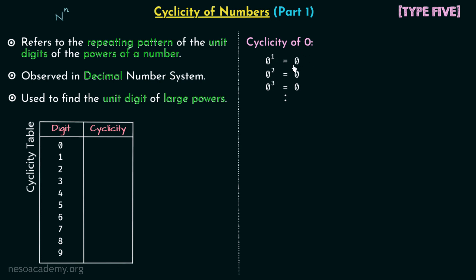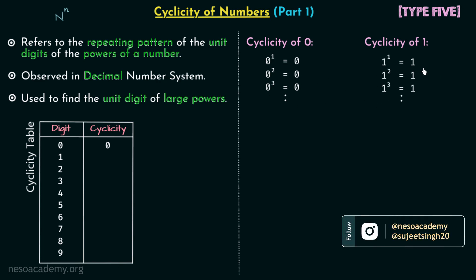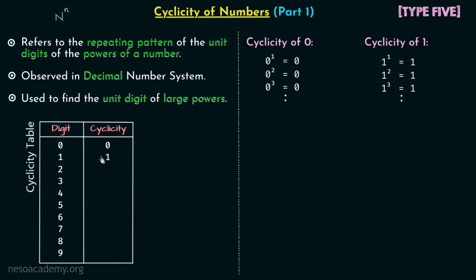For zero: 0¹ = 0, 0² = 0, 0³ = 0, and so on — we are getting zero every time, so zero has cyclicity equal to 1. For one: similarly, 1¹ = 1, 1² = 1, 1³ = 1, and so on — we get the same result throughout, so one also has cyclicity equal to 1.